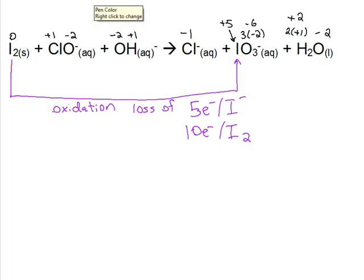Where are they going? Where's the gain? Well, let's take a look here at the other species that has an oxidation number change. It's the chlorine. This is a reduction, because we're going down an oxidation number. We went from positive one to negative one. That's a change of two. So we gained two electrons here.